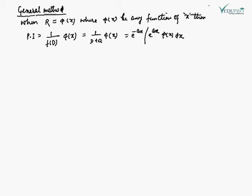This is a general method when r is equal to phi(x), where phi(x) is any function of x. The particular integral is equal to 1 upon f(d) into phi(x), which equals 1 upon (d + a) into phi(x). This equals e to the power of ax, times the integration of e to the power of negative ax into phi(x) dx. This is the process to find the particular integral when r is equal to phi(x).